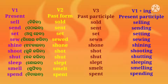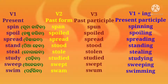Smell (sunghiiba): second form — smelt; third form — smelt; fourth form — smelling. Spend (bitaiiba): second form — spent; third form — spent; fourth form — spending. Spin (sutakatiiba): second form — spun; third form — spun; fourth form — spinning.